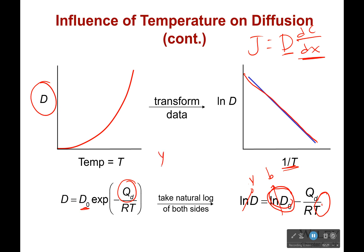And so what I have is y equals negative Qd over R times x plus b, and this is the equation of a straight line with this being my slope. So if I can figure out the slope of this line, I can figure out my activation energy.